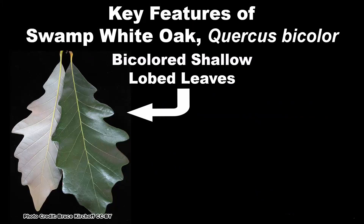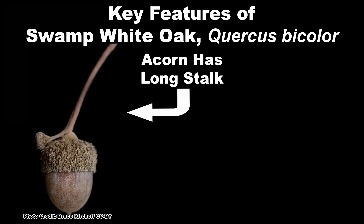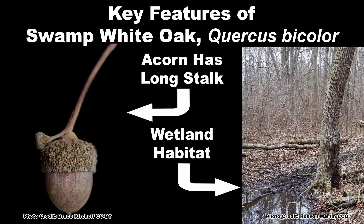Key features to identify swamp white oak in the field are the bicolored, toothed, or shallowly lobed leaves that are velvety on the lower surface, the long stalk that the acorns form on, and the wetland condition swamp white oak is normally found growing in.